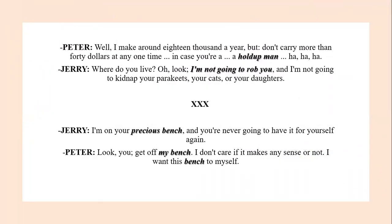Peter says: 'I make around $18,000 a year, but don't carry more than $40 at any one time — in case you're a hold-up man.' You can see how he humiliates Jerry with that remark. It might be a joke, but Jerry doesn't seem to find it funny. Jerry responds: 'Where do you live? Look, I'm not going to rob you, and I'm not going to kidnap your parakeets, your cats, or your daughters.' Classes can make people blind to each other. Being poor doesn't make Jerry a hold-up man — he has no money, but that doesn't mean he is a robber.